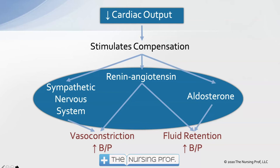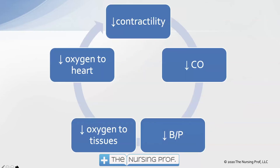Notice that most of the treatments we use for heart failure are actually addressing the compensatory mechanisms: beta blockers block the sympathetic nervous system, ACE inhibitors and ARBs block renin-angiotensin, and then aldosterone antagonists such as spironolactone. This is the vicious cycle that we get into with heart failure, where the heart has decreased contractility.